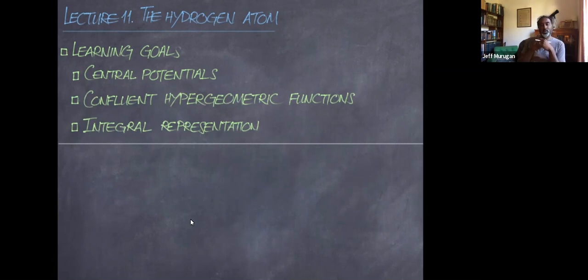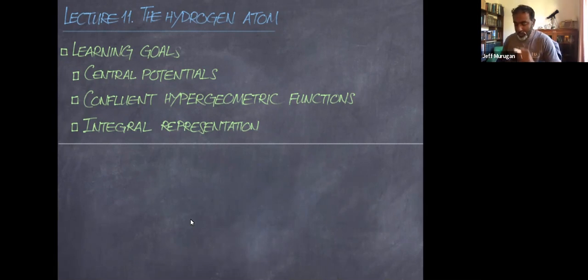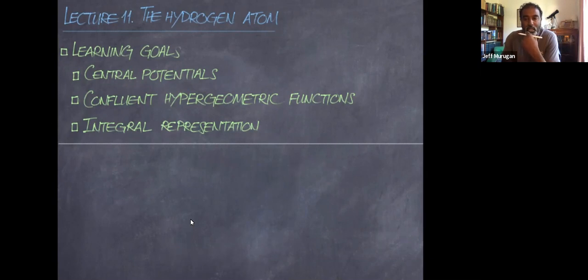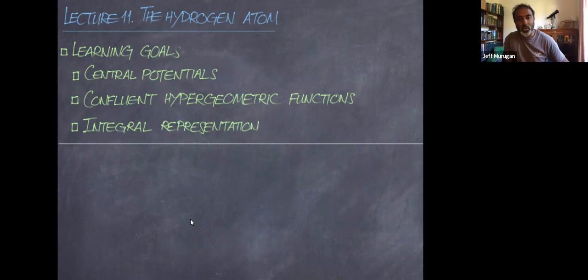We'll round off the lecture by writing down and using the integral representation for the hypergeometric function to work out an integral representation for the confluent hypergeometric function.